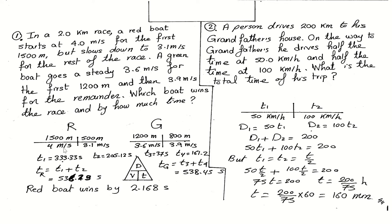For the red boat: the first 1,500 meters at 4 meters per second, and the remaining 500 meters at 3.1 meters per second. For the green boat: the first 1,200 meters at 3.6 meters per second, and the remaining 800 meters at 3.9 meters per second. We need to find which boat covers 2,000 meters in less time.